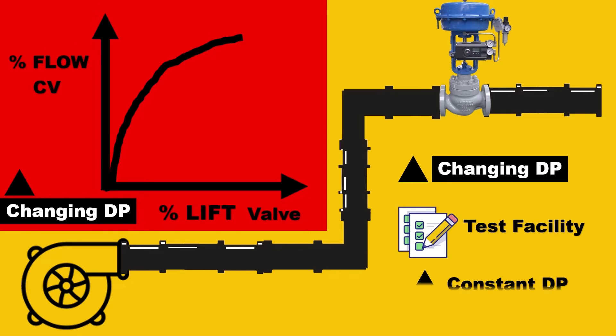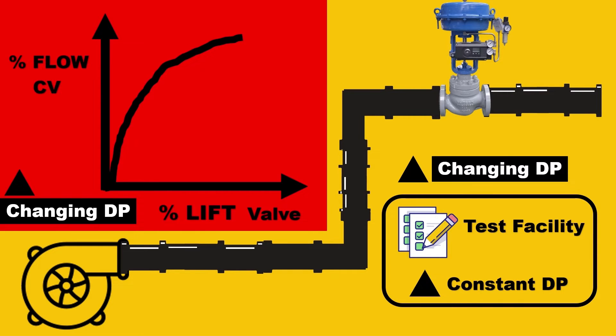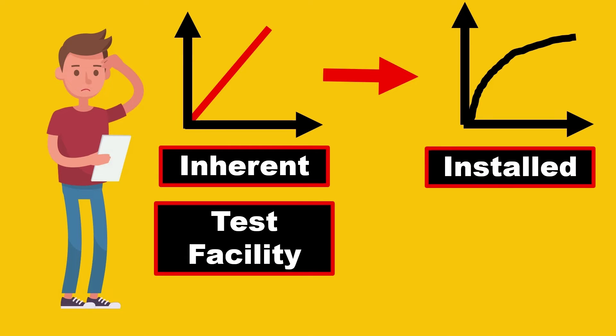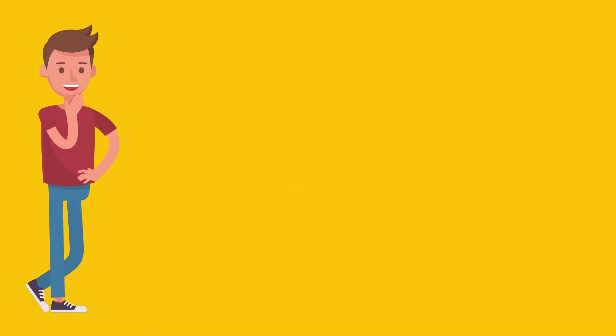The test facility had constant DP, right? This non-linearity is what we don't require. Engineers were confused that inherent characteristics were linear in the test facility, but when the same valve was put in the plant, the characteristics were non-linear. This is troublesome, but there is a very smart and creative solution.